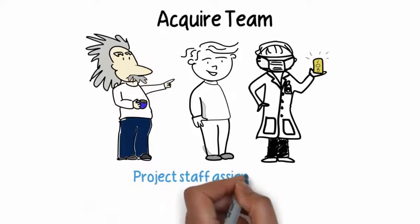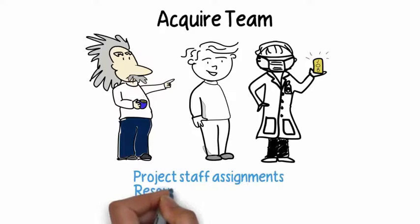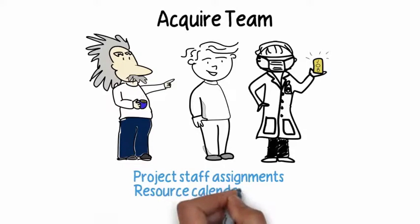Your outputs for the acquire team process are your project staff assignments, your resource calendars, and updates to your plans accordingly wherever necessary.